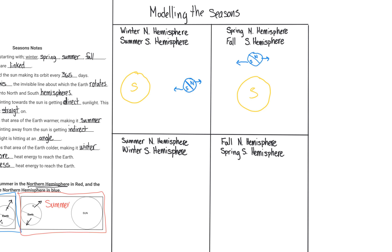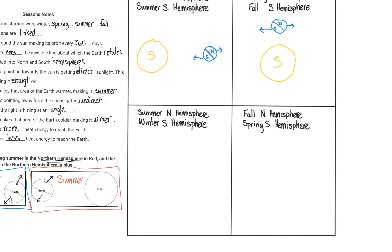Here's our model for spring. The earth keeps orbiting to the point that it is now over here. We have our northern hemisphere and our southern hemisphere. The northern hemisphere is now pointed at the sun, the southern hemisphere is pointed away. That means it's summer in the northern hemisphere, winter in the southern hemisphere.